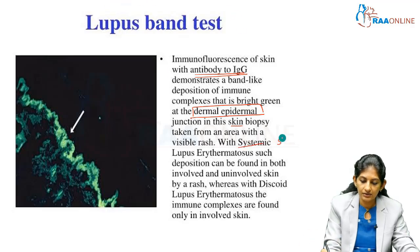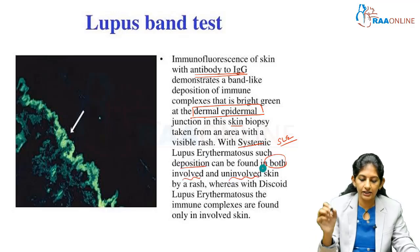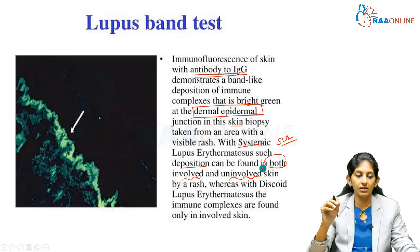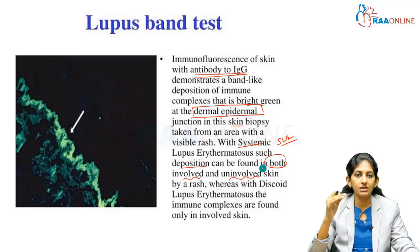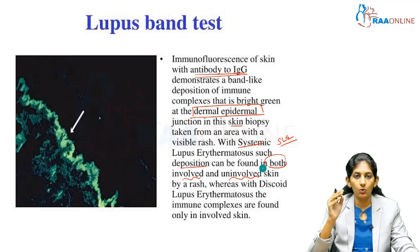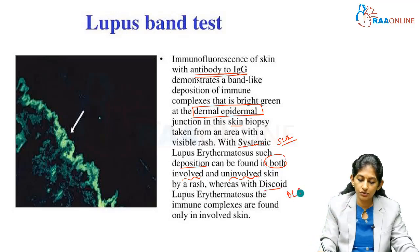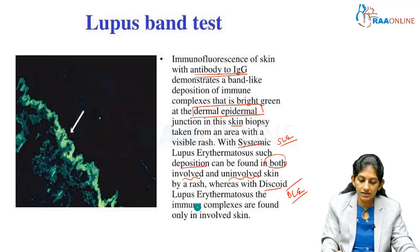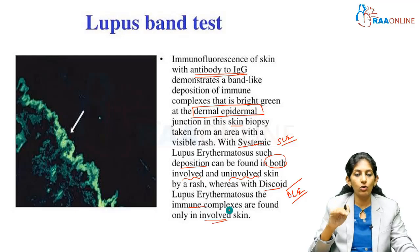In SLE patients, the deposition is seen both in the involved and in the uninvolved skin — this is very important. The entire dermal-epidermal junction has IgG deposited. However, if the patient is only suffering from DLE, that is discoid lupus erythematosus, where only cutaneous involvement is present, the immune complexes are found only in the involved skin, not in the uninvolved skin.